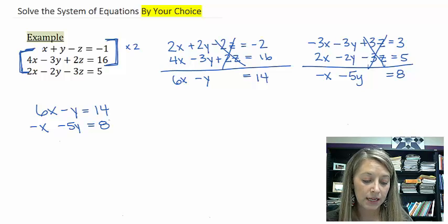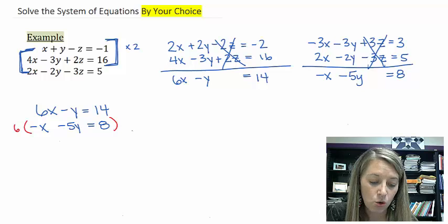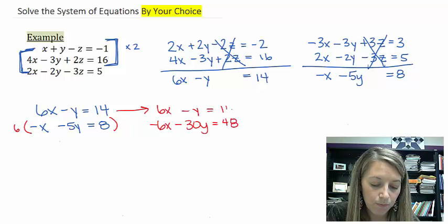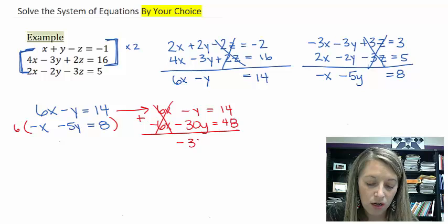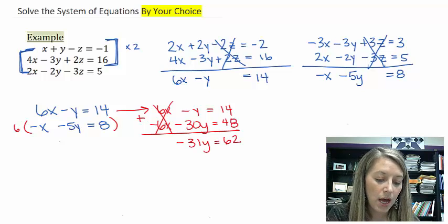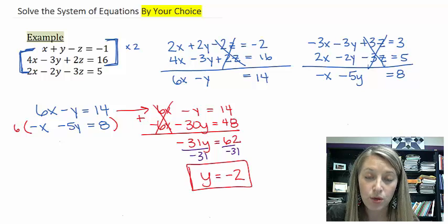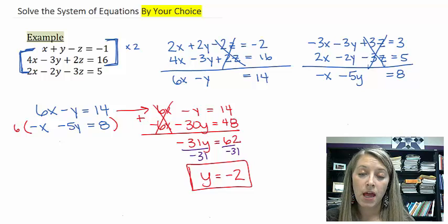I'm going to choose to eliminate the x's for no good reason, maybe because they're opposite signs of each other. And I'm going to do that by multiplying my second equation by 6. So that gives me negative 6x minus 30y is equal to 48. And if I partner that up with my first equation, and I add those two guys together, my x's cancel out, and I get negative 31y is equal to 62. When I solve for this by dividing by negative 31, I get that y is equal to negative 2. So I have one of my three answers. I have three answers here, an x variable, a y variable, and a z variable. So I found my y variable.